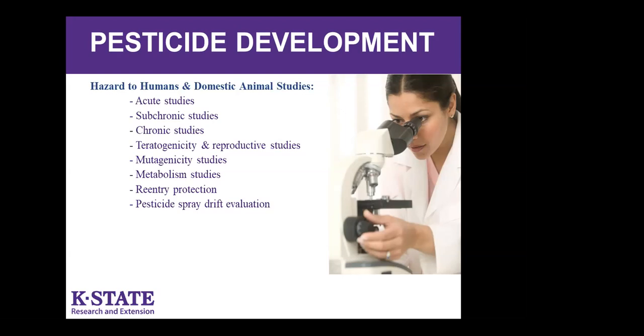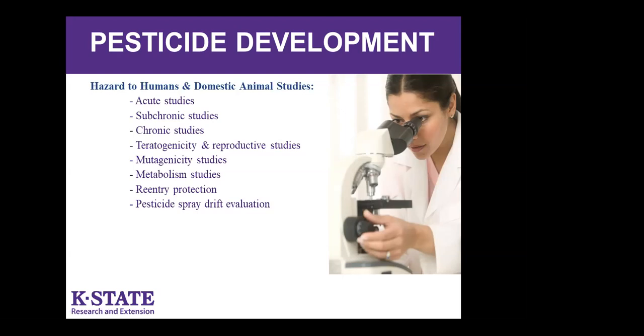Studies include safety of humans and domestic animals, as well as non-target organisms like aquatic organisms or earthworms in the soil. These can be very extensive studies. The most important one for the manufacturer is product performance — they take products out into the field and work with farmers. They actually have to destroy the crop when spraying test fields until the product is registered. For further information about these studies, go to the EPA.gov site listed on the slide.